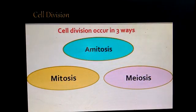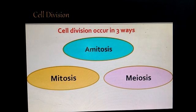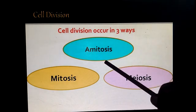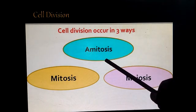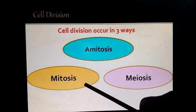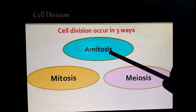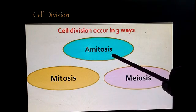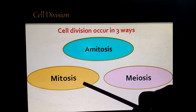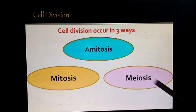Cell division occurs in three ways. First one, amitosis. Second one, mitosis. And third one, meiosis. Amitosis, mitosis, and meiosis.